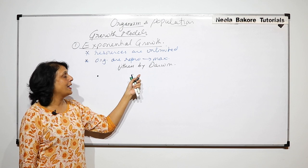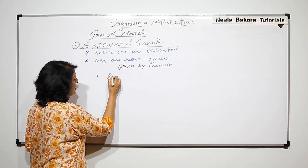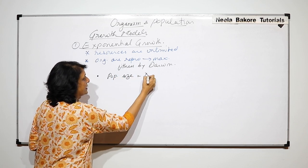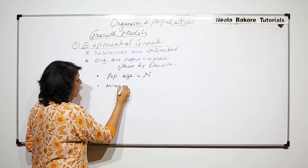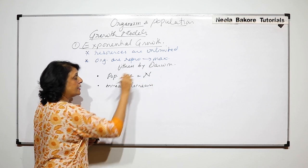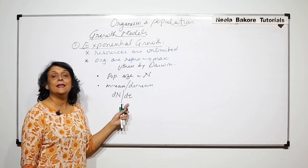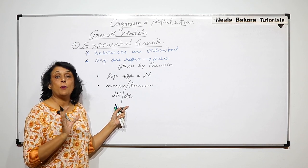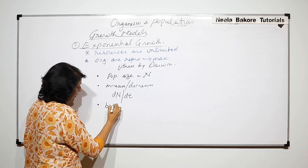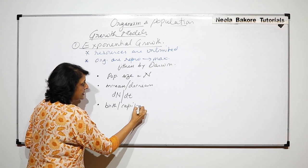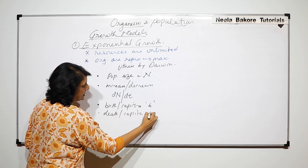Now, if we want to find out how much the growth increases or decreases when resources are unlimited and reproductive potential is fully utilized, the population size is represented by N. The increase or decrease in population size can be found using dN/dt, where t is the time period in which we want to study the population change.